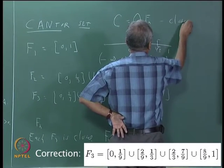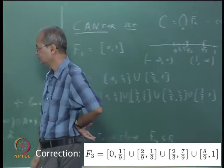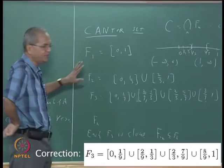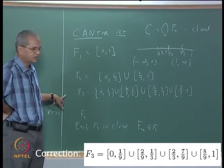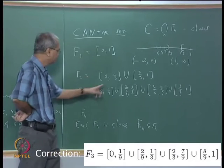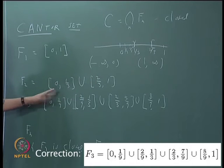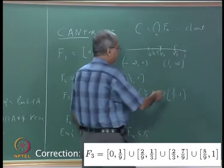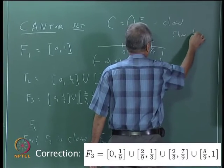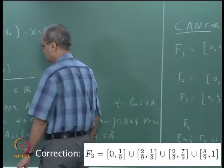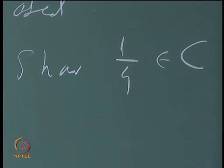Now the question is whether the Cantor set contains any points at all, since we have dropped so many intervals. But you can see that at no stage do 0 or 1 get dropped. So the Cantor set obviously contains 0 and 1. Similarly, it will contain all the endpoints such as 1/3, 2/3, 1/9, 2/9, and so on. These endpoints of the intervals are never dropped. I will give you an exercise to show that 1/4 also belongs to C — it will require some work.